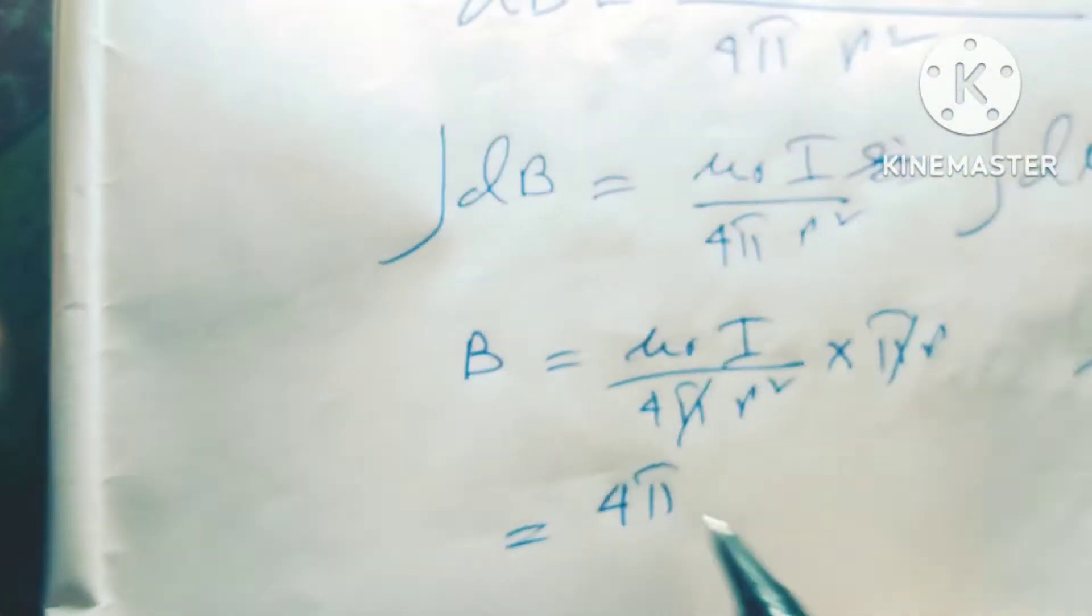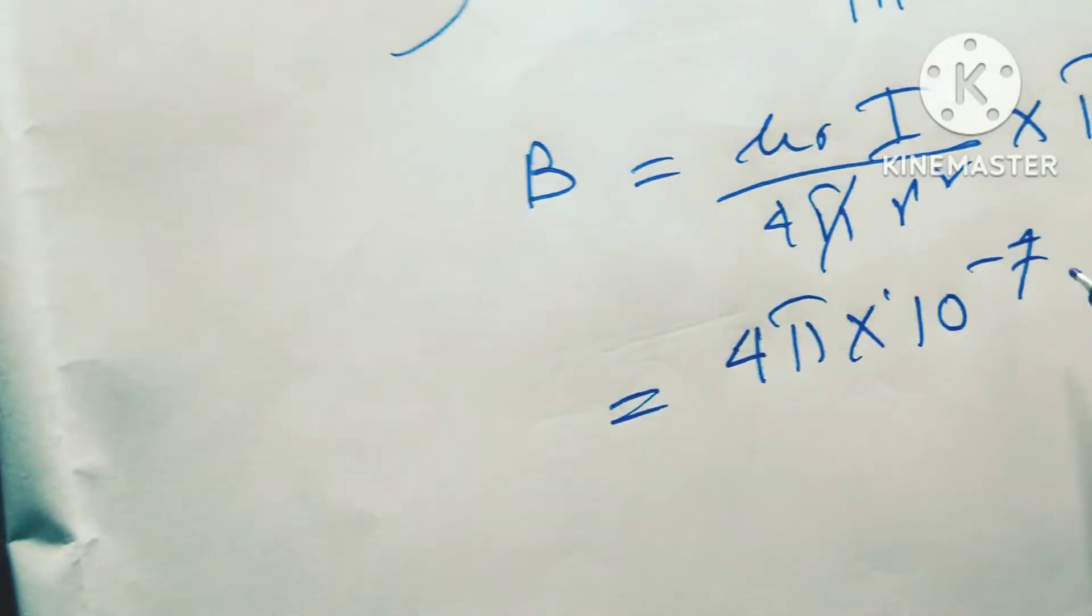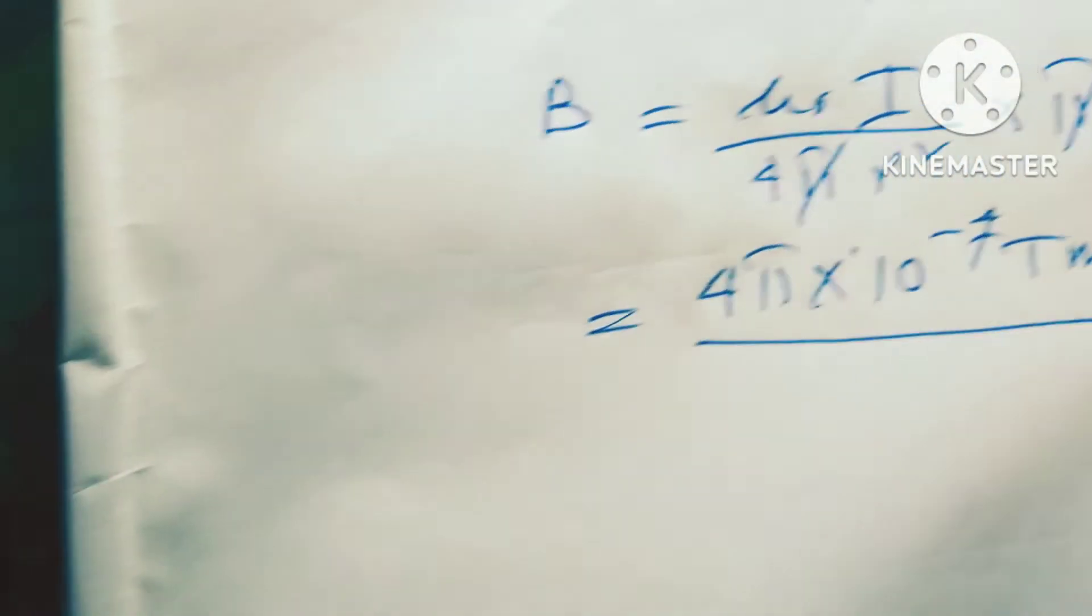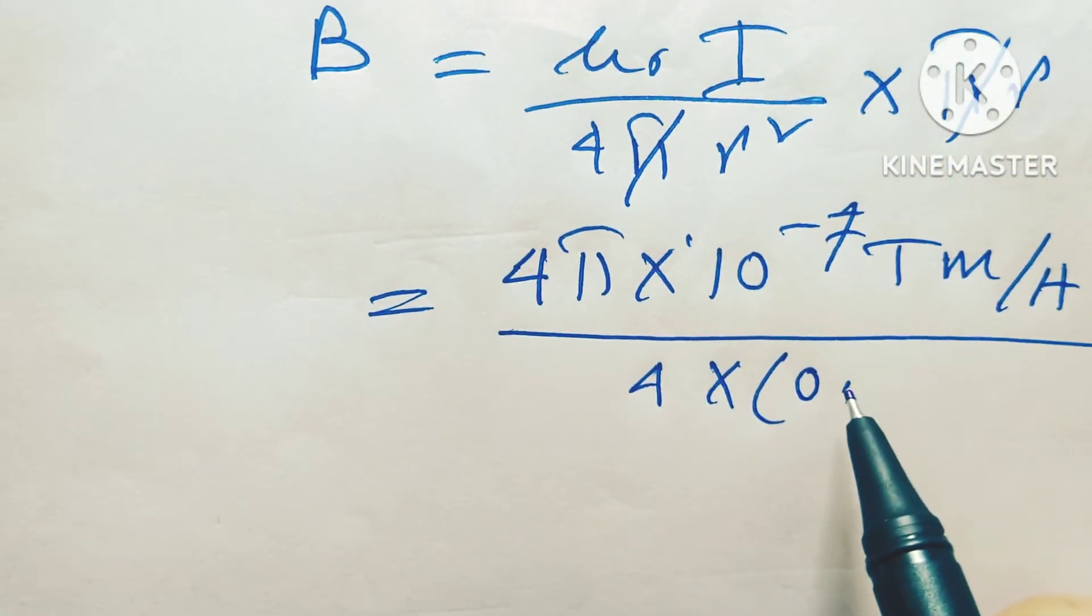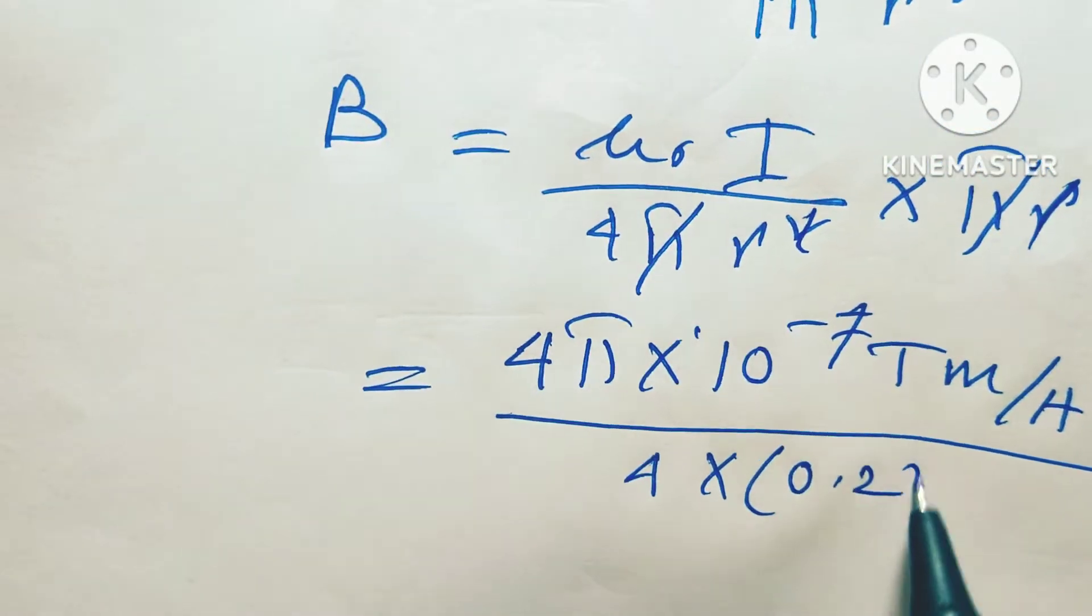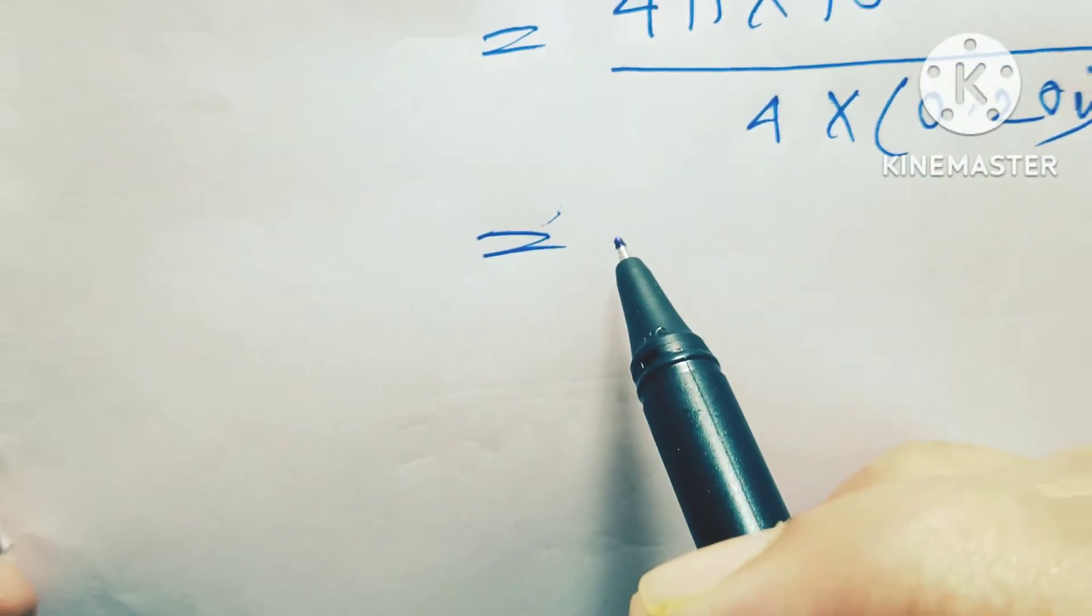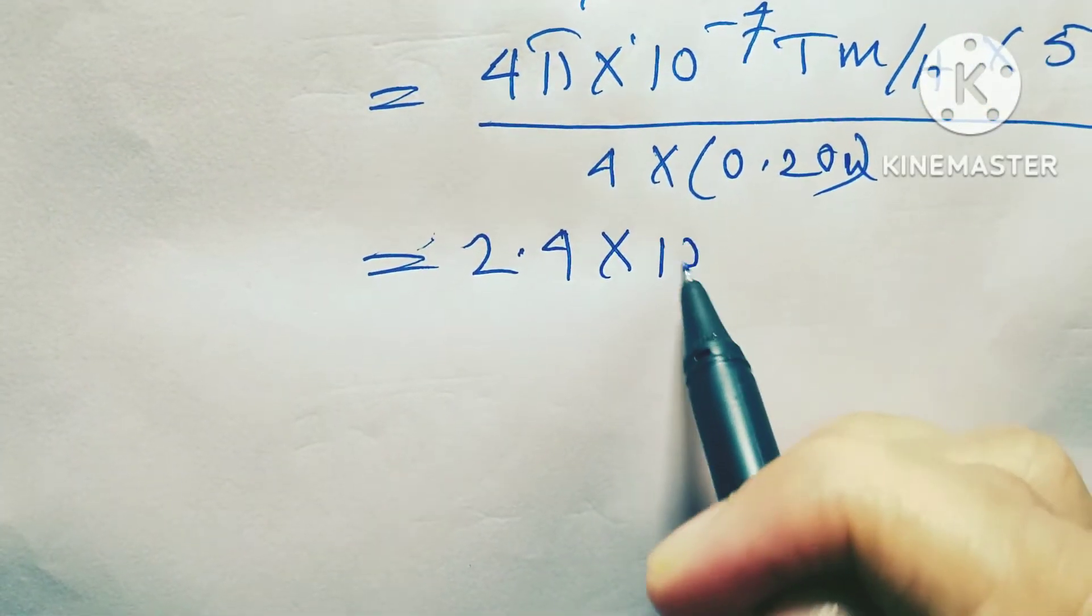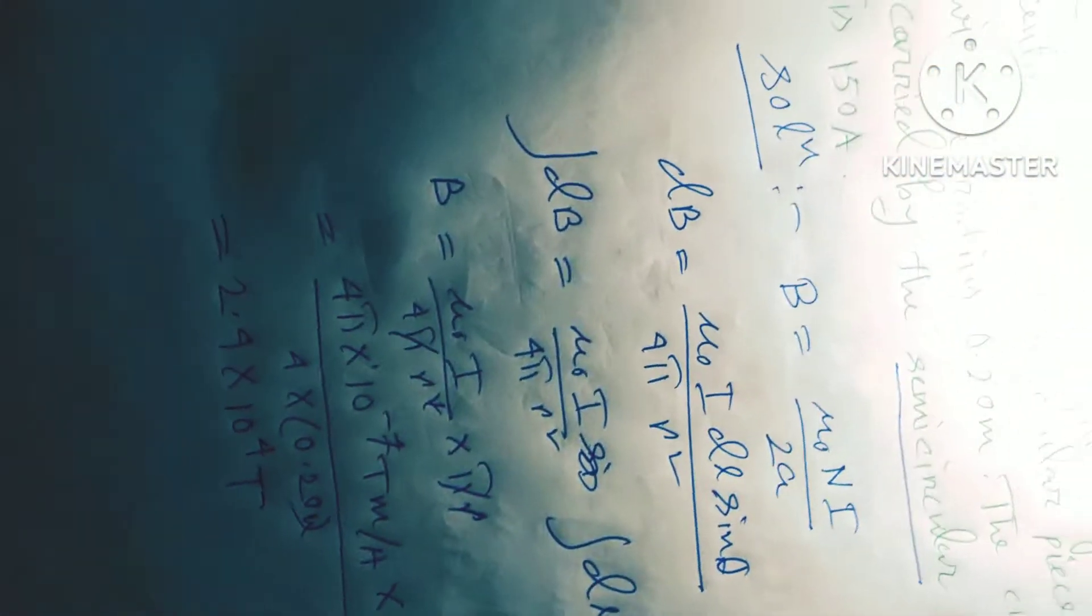So, I'm just putting this value: 4π into 10 to the power minus 7 tesla meter per ampere and 150 ampere divided by r square is equal to 4 into 0.20 meter. After that we get the value 2.4 into 10 to the power minus 4 Tesla.